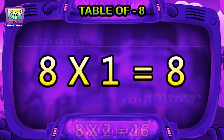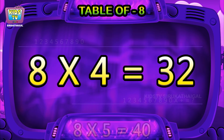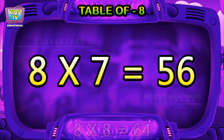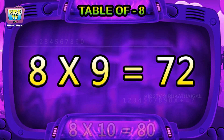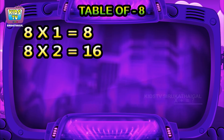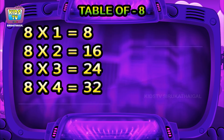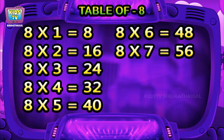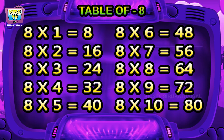Table of eight. Eight ones are eight, eight twos are sixteen, eight threes are twenty-four, eight fours are thirty-two, eight fives are forty, eight sixes are forty-eight, eight sevens are fifty-six, eight eights are sixty-four, eight nines are seventy-two, eight tens are eighty. Eight ones are eight, eight twos are sixteen, eight threes are twenty-four, eight fours are thirty-two, eight fives are forty, eight sixes are forty-eight, eight sevens are fifty-six, eight eights are sixty-four, eight nines are seventy-two, eight tens are eighty.